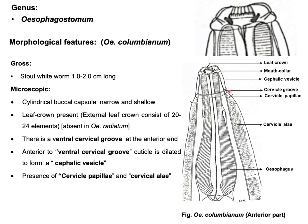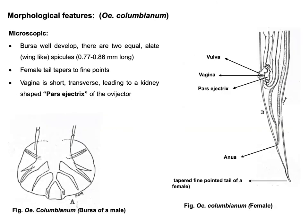Anterior to the ventral cervical groove, the cuticle is dilated to form a cephalic vesicle, which is another cuticular modification. There is also presence of cervical papillae and cervical alae. A well-developed bursa is present in the male, along with two equal wing-like spicules. For the female, the tail tapers to a fine point, and the vagina is short and transverse, leading to a kidney-shaped ovejector.